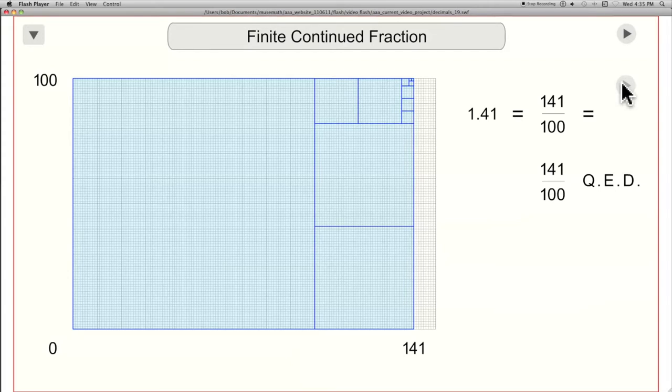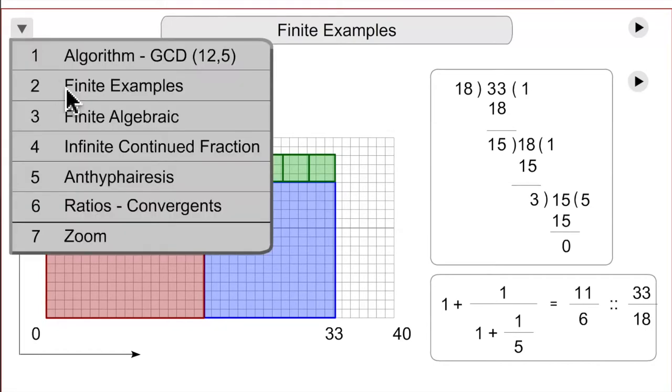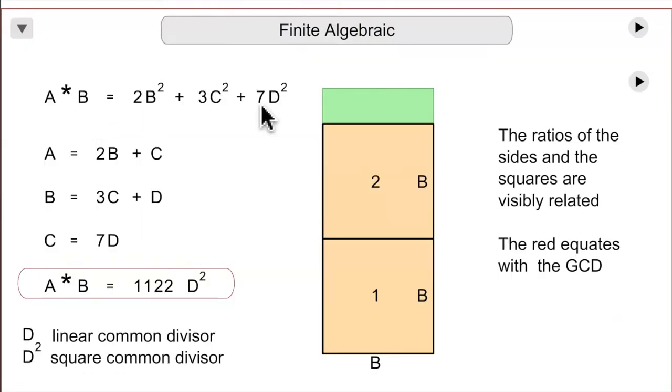And that's what I wanted to have the app do. And you can also show a finite continued fraction algebraically. This illustration I got from the Euclidean Algorithm article in Wikipedia, and all I did was add in the letter names and the numbers, so you can see the relationships a little bit clearer.